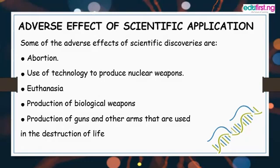The adverse effects of scientific application can be seen in the following areas: abortion, the use of technology to produce nuclear weapons, euthanasia, production of biological weapons, and the production of guns and other arms used in the destruction of life. These are the negative effects and misapplications of science.